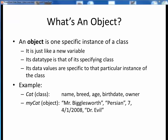For example, suppose we had a class named Cat, and we decided that a cat could be adequately described by a name, a breed, an age, a birth date, and an owner. Then, in a nod to any Austin Powers fans out there, we might imagine there to be an object, or a specific instance of the Cat class, named MyCat. As for the attributes of this specific Cat, its name is Mr. Bigglesworth, its breed is a Persian, its age is 7, its birth date is 4-1-2008, and its owner, of course, is none other than Dr. Evil.